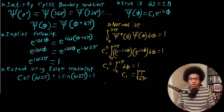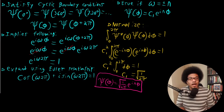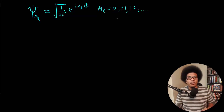Our full wave function for the particle on a ring is: psi of phi equals the square root of one over two pi times e to the i N phi. This wave function is usually written using the angular momentum quantum number M sub L in place of N. So the final form is: psi of phi equals one over square root of two pi times e to the i M_L phi, where M_L can equal zero, plus or minus one, plus or minus two, and so on — any integer.